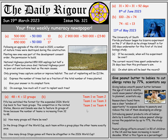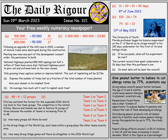Team 2 has already played Team 1, so they still have to play Team 3 and Team 4. Then Team 3 has already played Teams 1 and 2, so they still have to play Team 4. That's 6 games altogether per group. With 12 groups, that's 12 lots of 6, which is 72 group games altogether in the 2026 World Cup.